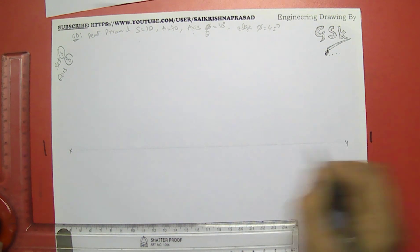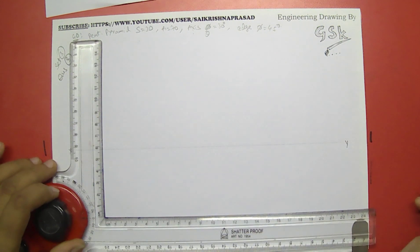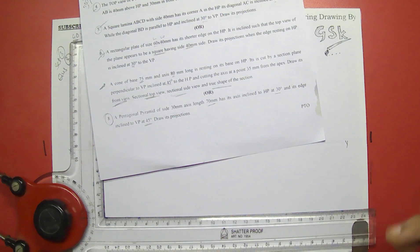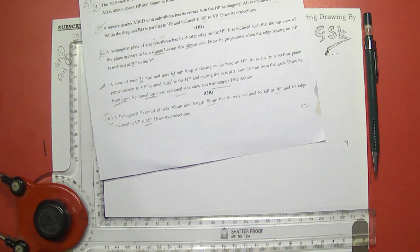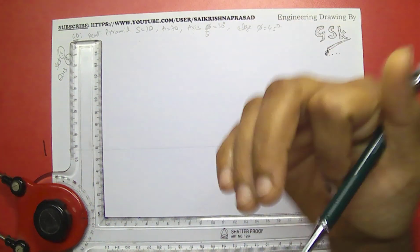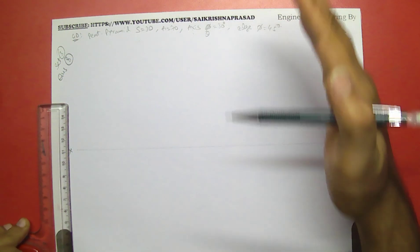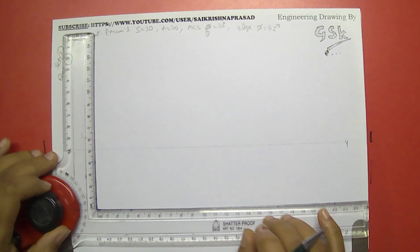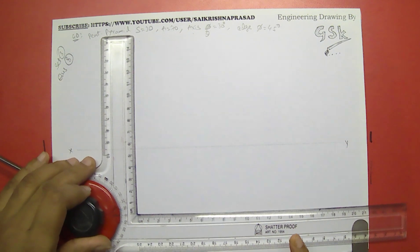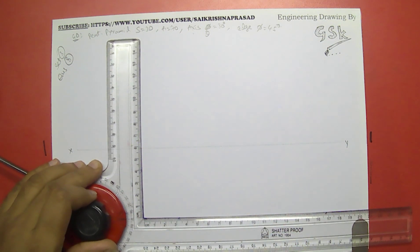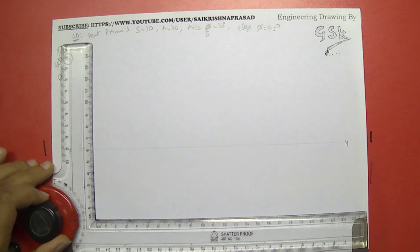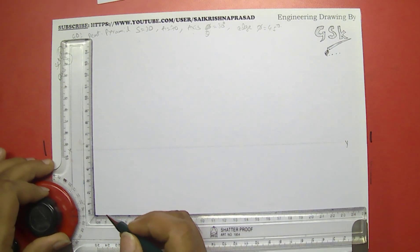This is our main reference line XY. I will be drawing the top view of the pyramid first, because whenever you are drawing solids you have to draw the top view first — in the top view we will be getting the true shape of the base. So we draw the true shape of the base first. The front view will show the height of the solid.